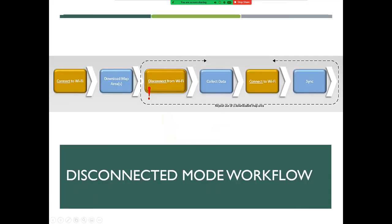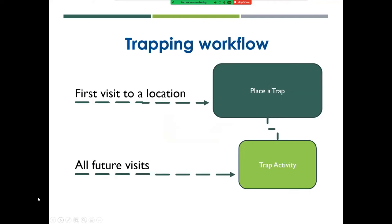Just a quick review of the disconnected mode workflow — this should look fairly familiar. Just like Collector, the ArcGIS Field Maps application is designed specifically to operate while disconnected. It involves some prep while connected to Wi-Fi to download a map area, then you disconnect and go out to collect data. At the end of the day, returning back to Wi-Fi, you can synchronize the data you collected while disconnected back to that portal.